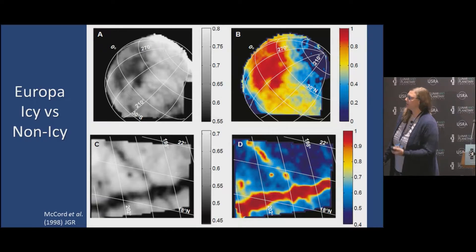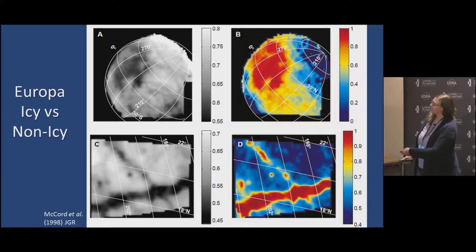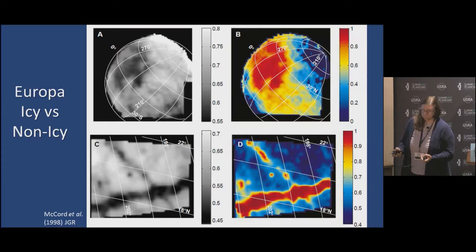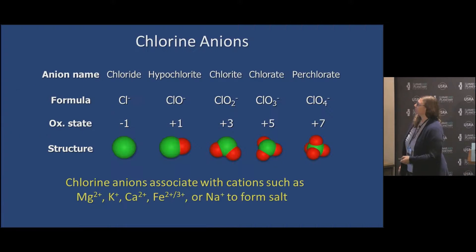We've seen this non-icy material that has been purported to be magnesium sulfates in a few different papers, but I want to talk about chlorine salts.